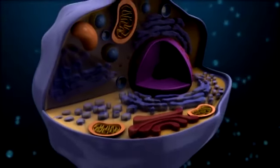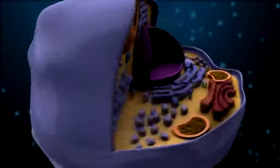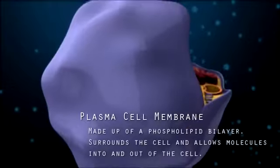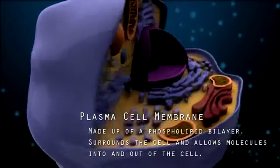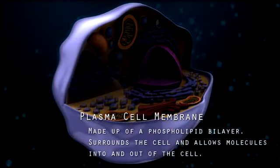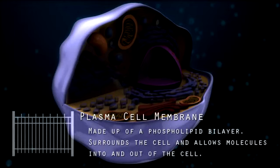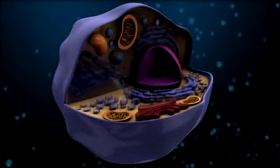A plasma cell membrane is made up of a phospholipid bilayer. The bilayer surrounds the cell, protecting it, and functions as a gate that allows molecules into and out of the cell. In our city analogy, the cell membrane would be like a large fence surrounding the city that only allows certain molecules to go in and out.